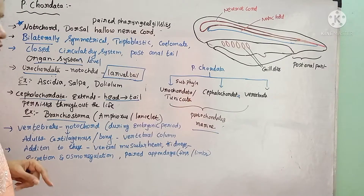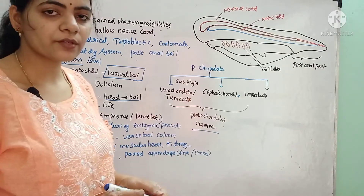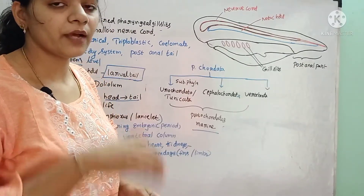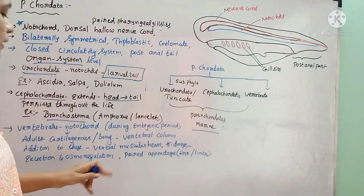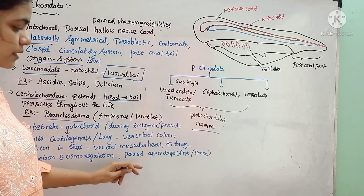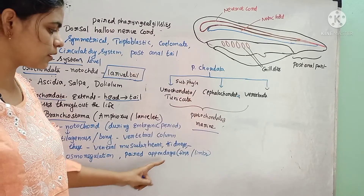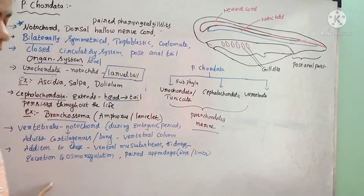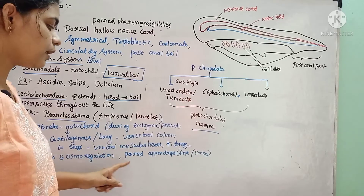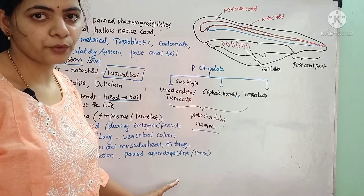In addition to this, vertebrates also consist of a ventral muscular heart. The dorsal side is the back side, and the ventral is the front region. We have the heart in the ventral region made up of cardiac muscles. Kidneys are also present for excretion and osmoregulation. Vertebrates have paired appendages for locomotion.